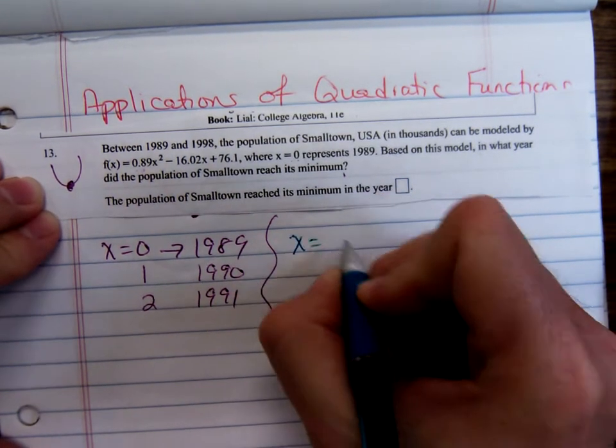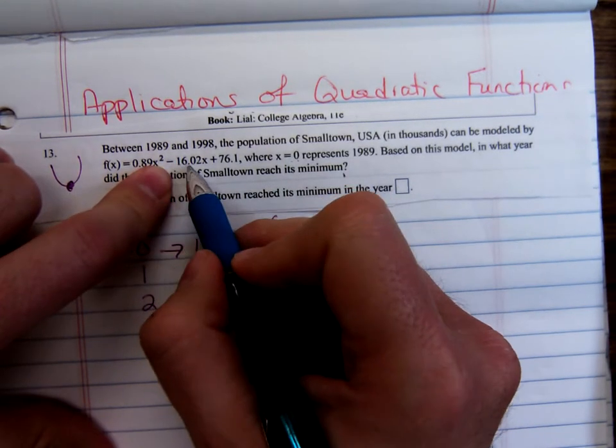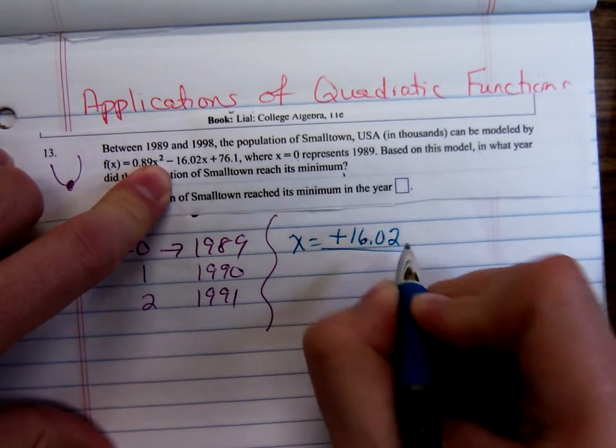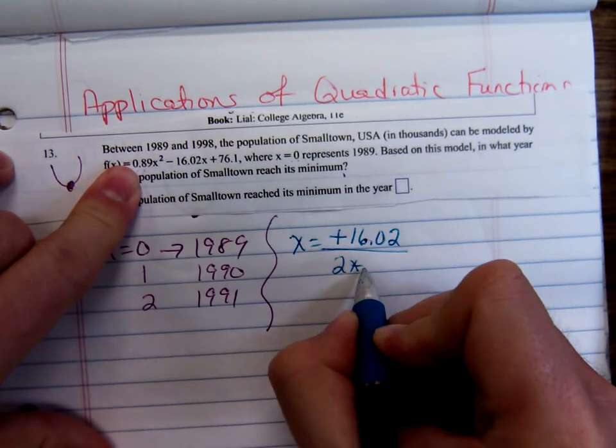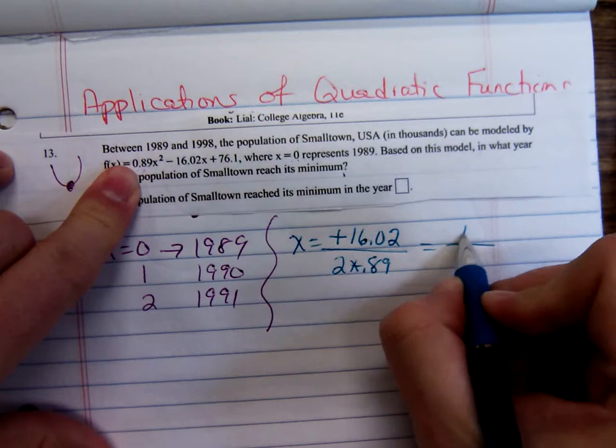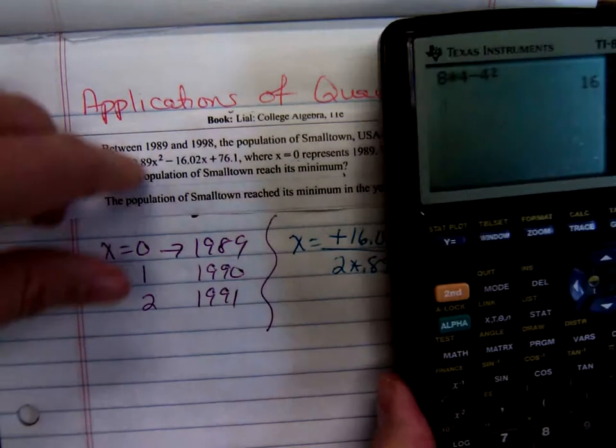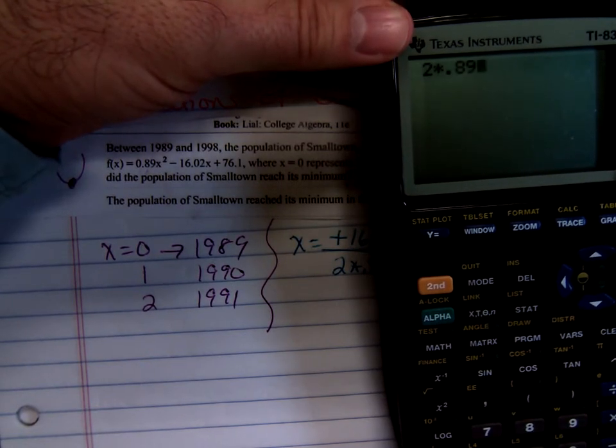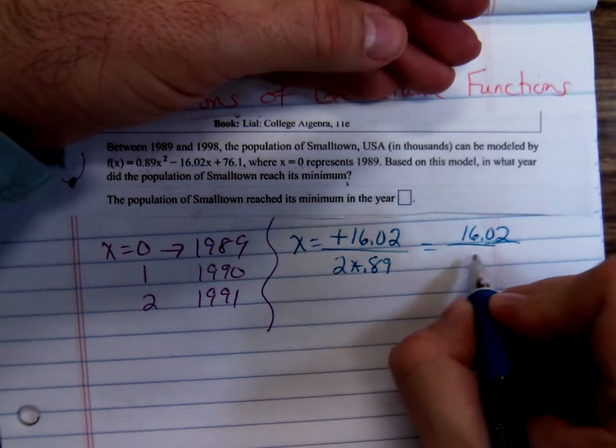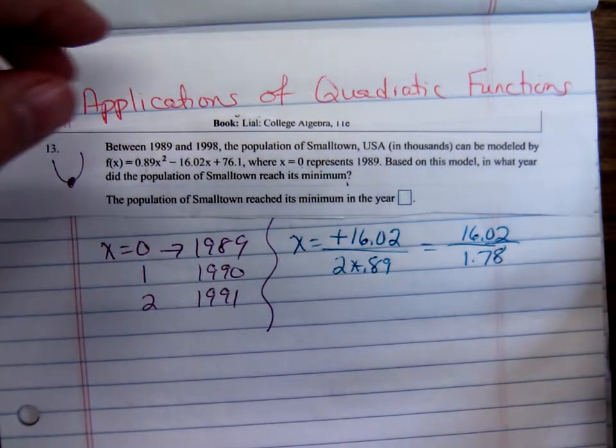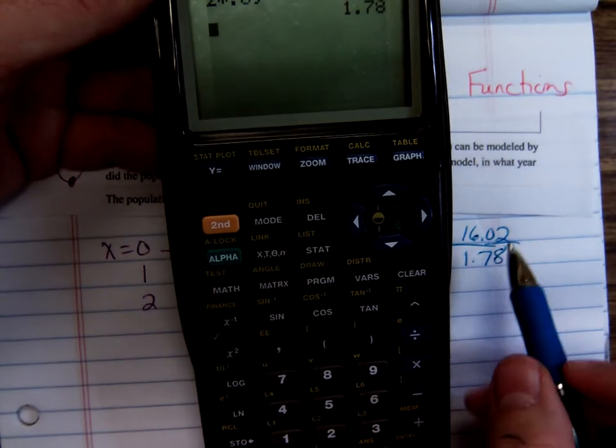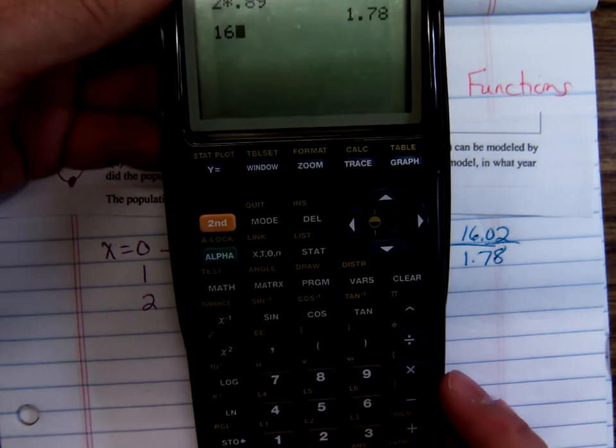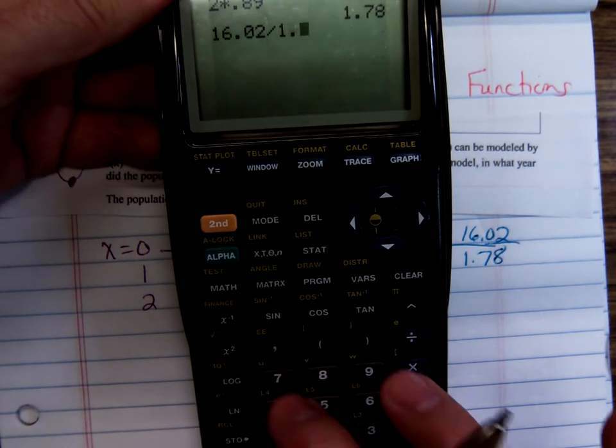x = minus a negative, so that would be positive 16.02 all over 2 times 0.89. So we have 16.02 over 2 times 0.89. 2 times 0.89 is 1.78. So we're punching in 16.02 divided by 1.78.